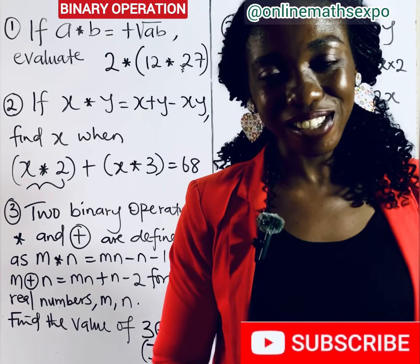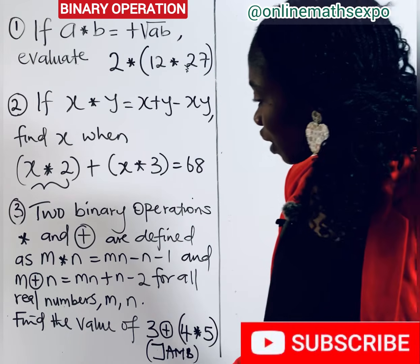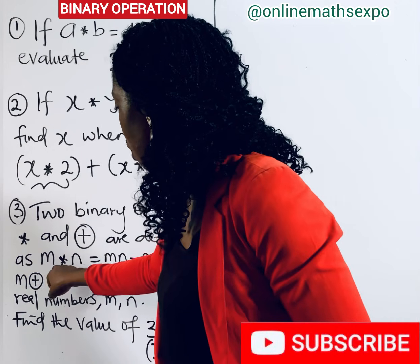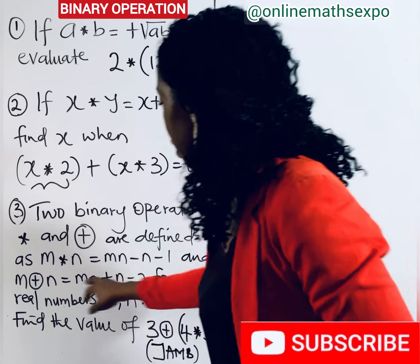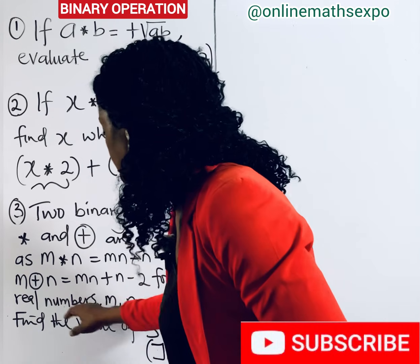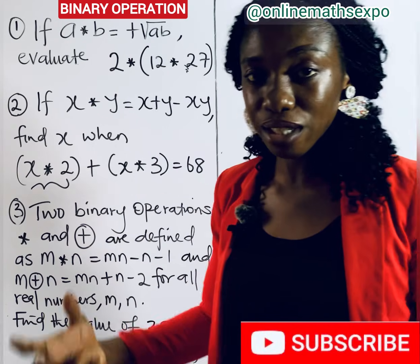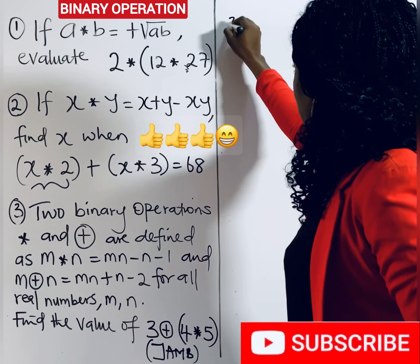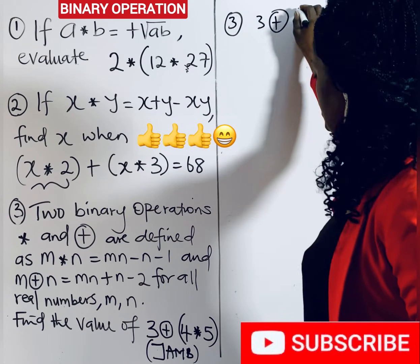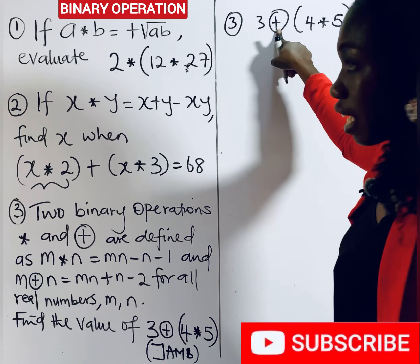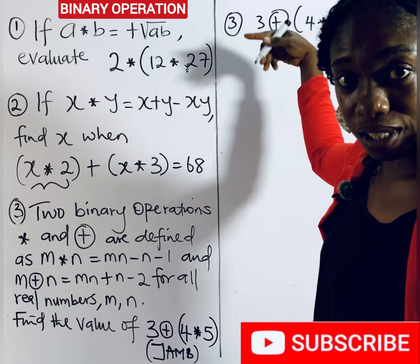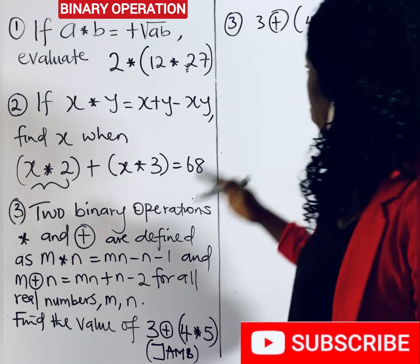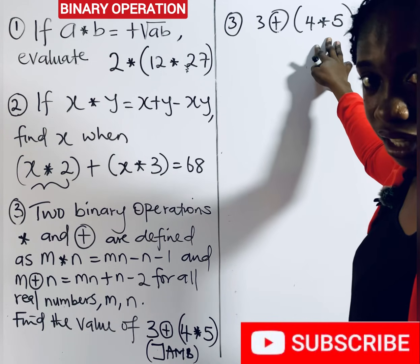Don't forget to tell us how helpful this is in the comments and share with your friends. For question three, we are told two binary operations are defined: m ∗ n = mn − n − 1, and m ⊕ n = mn + n − 2, for all real numbers m and n. Real numbers are those you can find on the number line. We are asked to find the value of a combined expression.